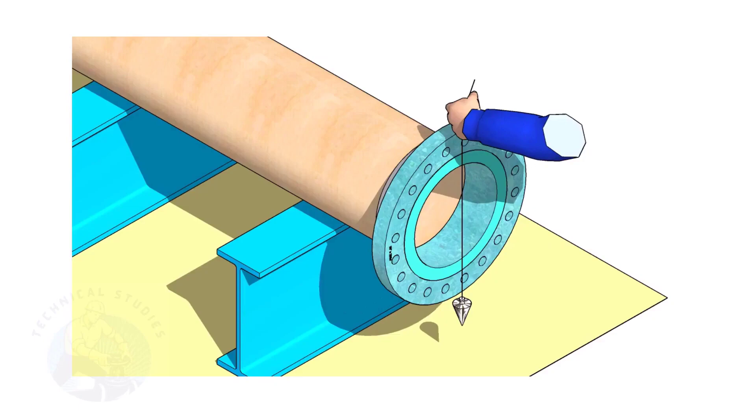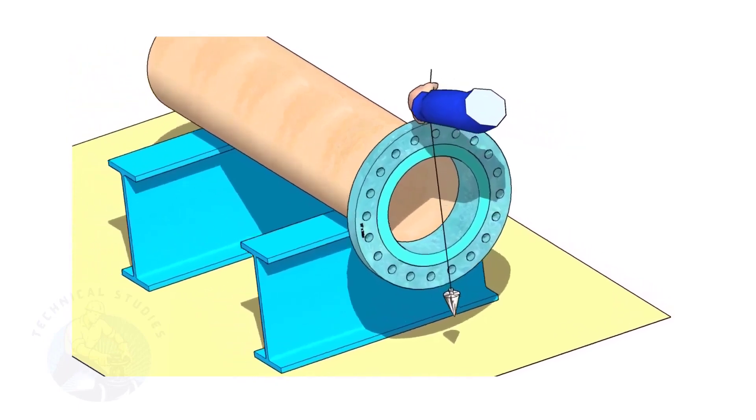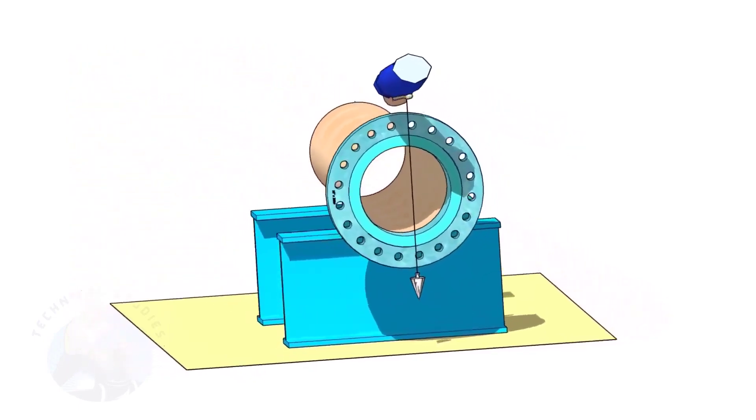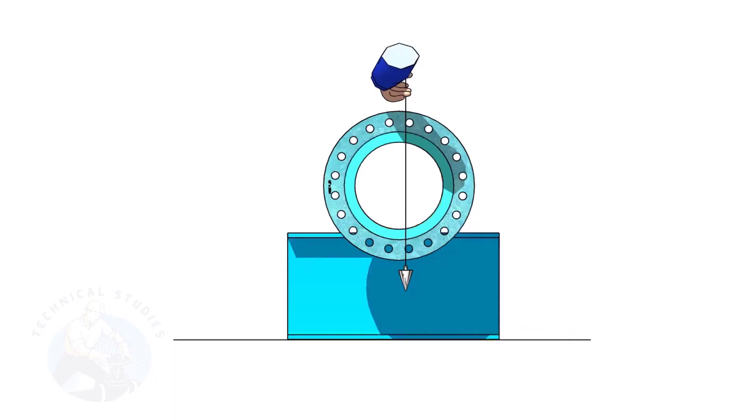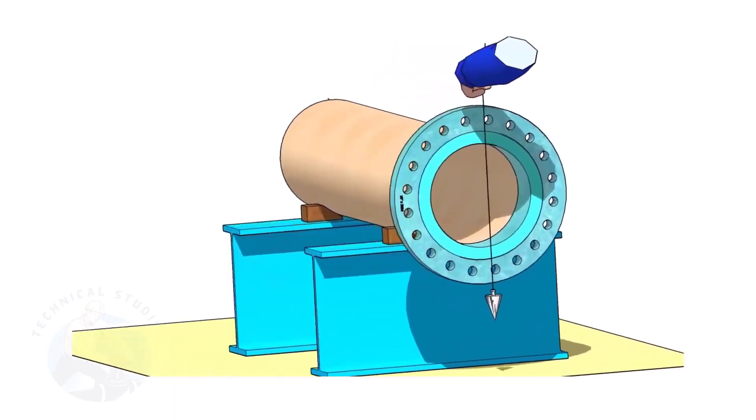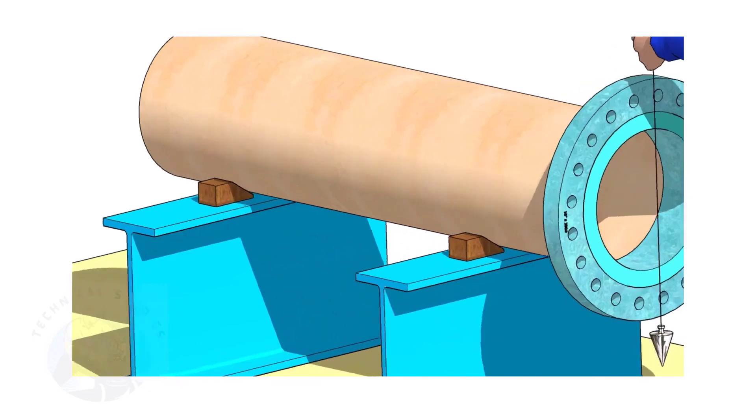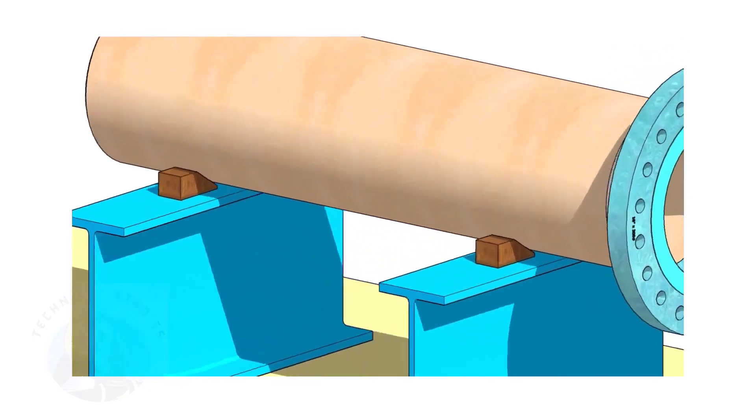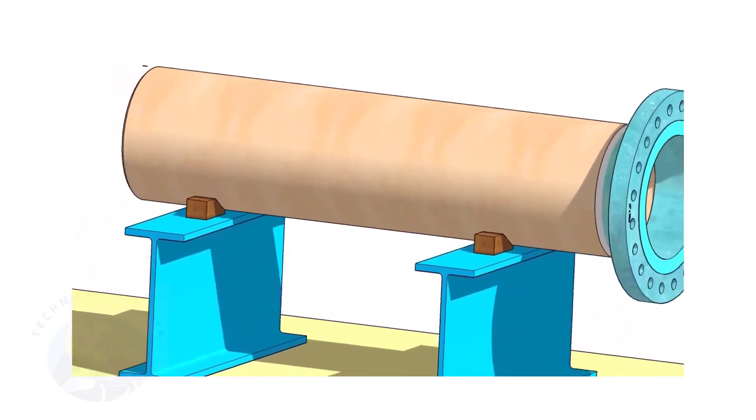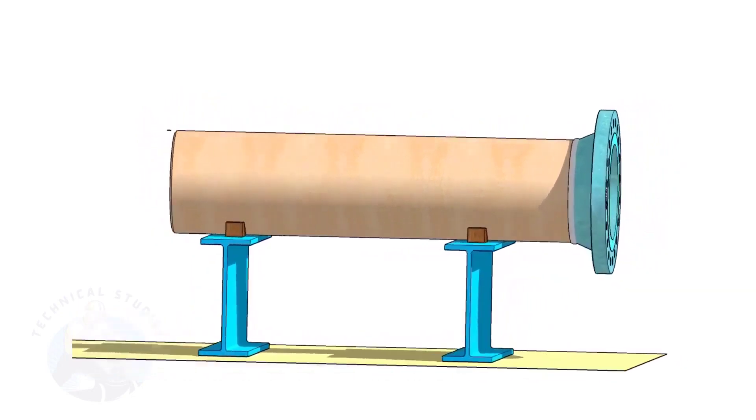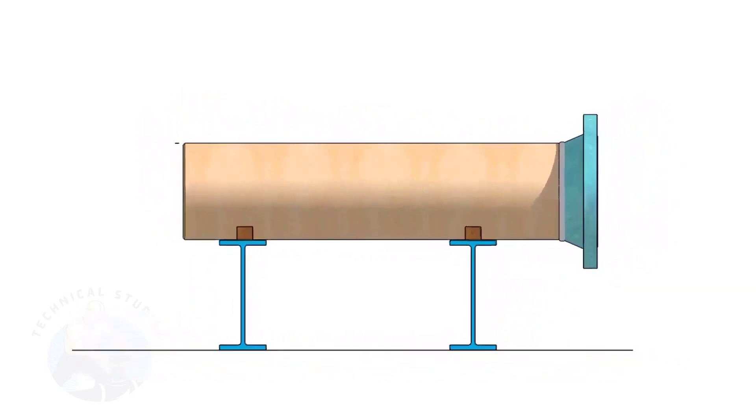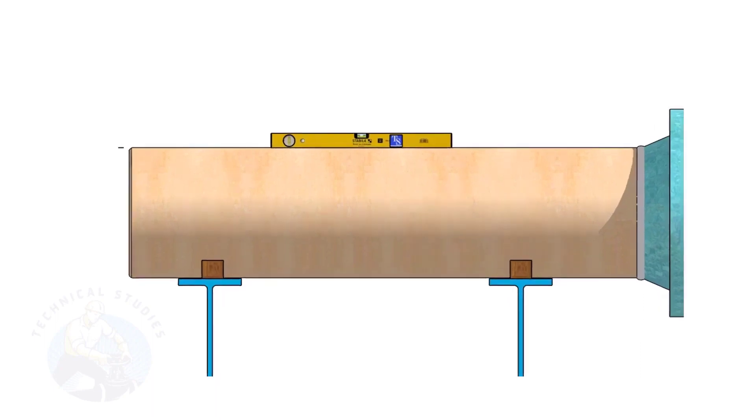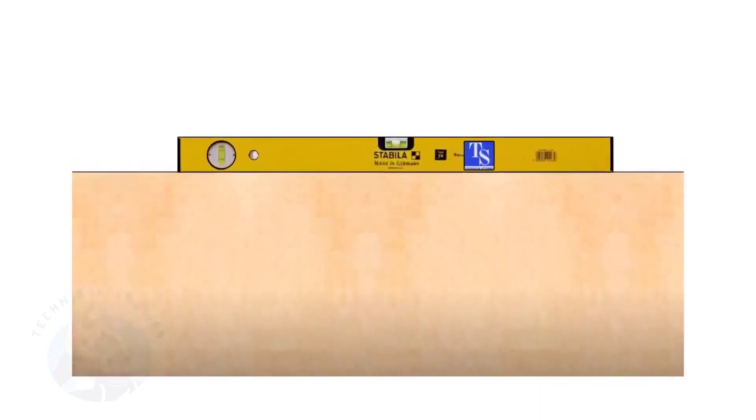Choose a set of holes closer to the center of the flange. This will ensure more accuracy. Provide proper supports on both sides of the pipe to prevent rotation. Correct the level of the pipe. Check the plumbness of the flange a second time.